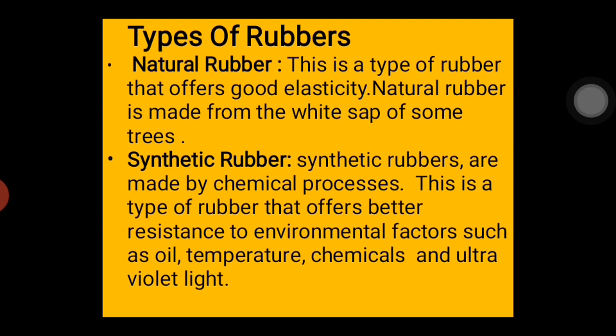Synthetic rubbers are rubbers that are made by chemical processes — chemicals are added and it goes through chemical processes to produce synthetic rubber. It is a type of rubber that offers better resistance to environmental factors such as oil, temperature, chemicals, and ultraviolet light.